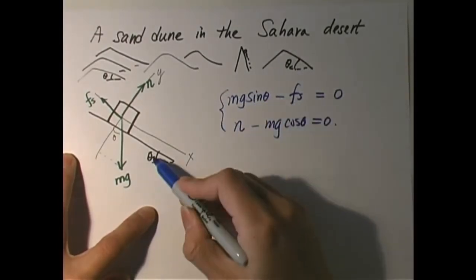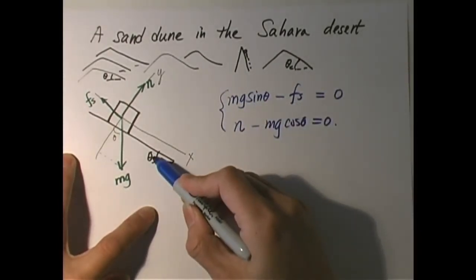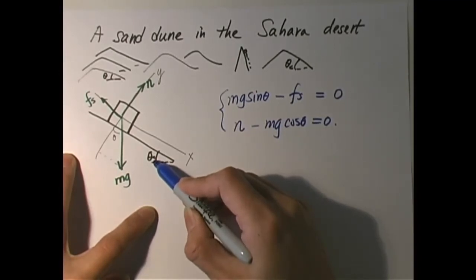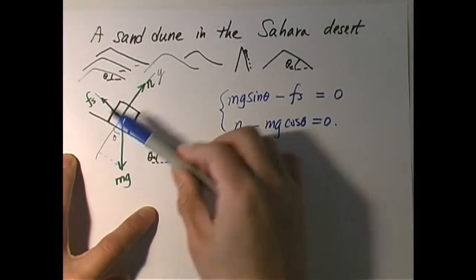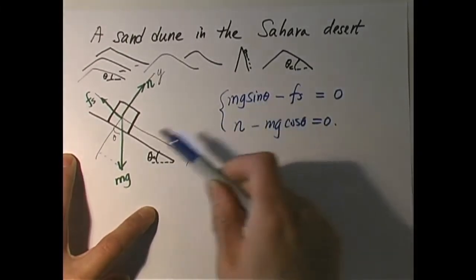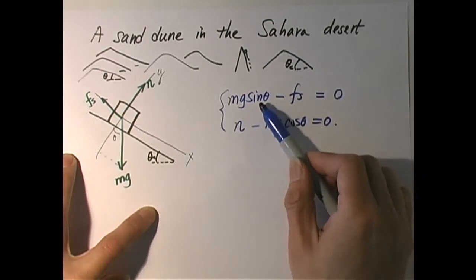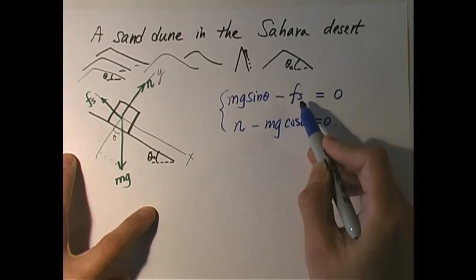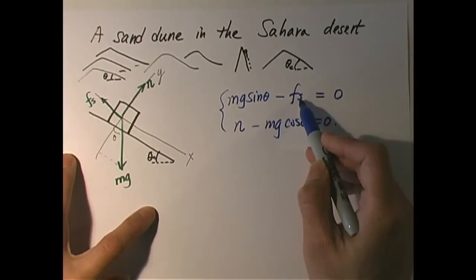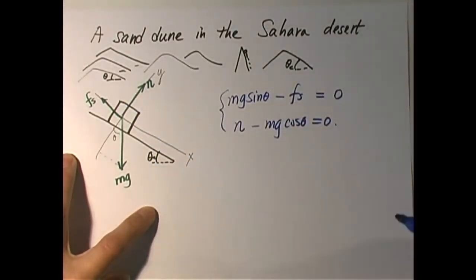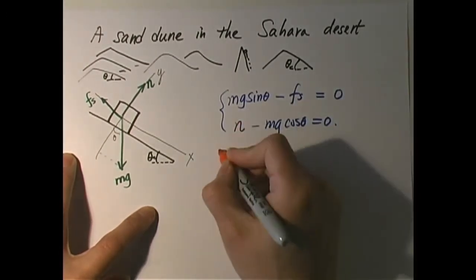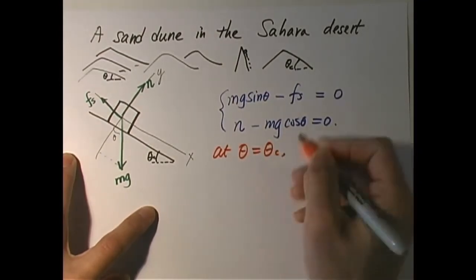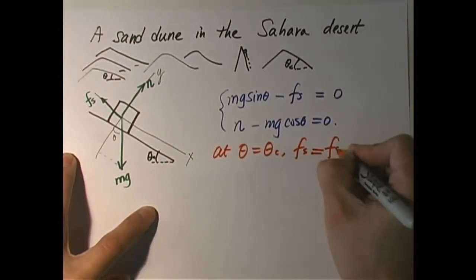This equation is valid at any angle of inclination up to the critical angle. As I raise the incline, Mg sine theta goes up because theta goes up, which means Fs has to pick up accordingly to cancel with Mg sine theta. But at the critical angle, Mg sine theta is so large that the force of static friction has already reached its maximum value — it cannot go any higher than that.